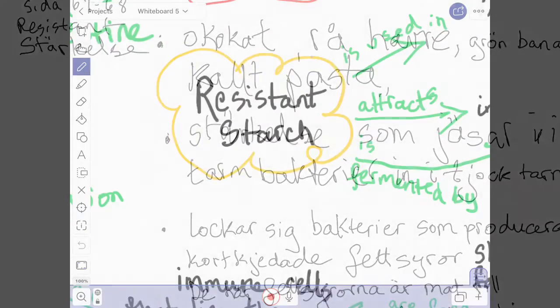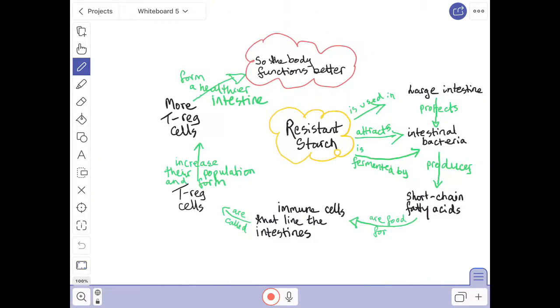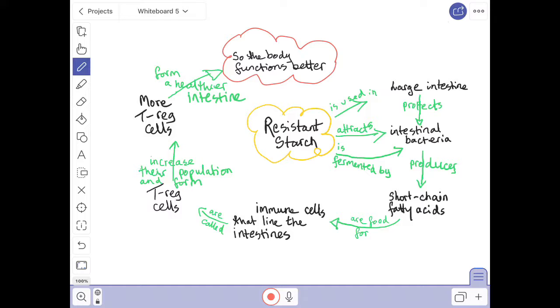So what did I do? I started putting the ideas together in a concept map. So here you can see the words or the key ideas or the key terms written in black. So I start with resistant starch.